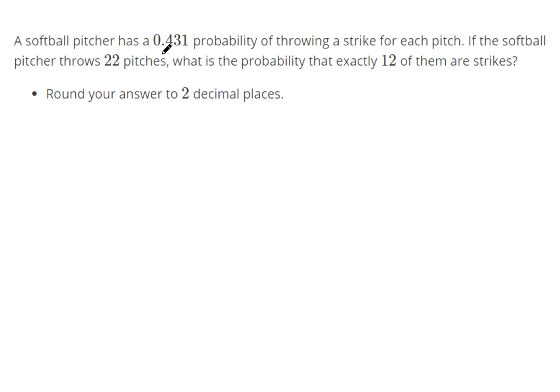A softball pitcher has a 0.431 probability of throwing a strike on each pitch. They're going to throw 22 pitches. What's the probability that exactly 12 of them are strikes?